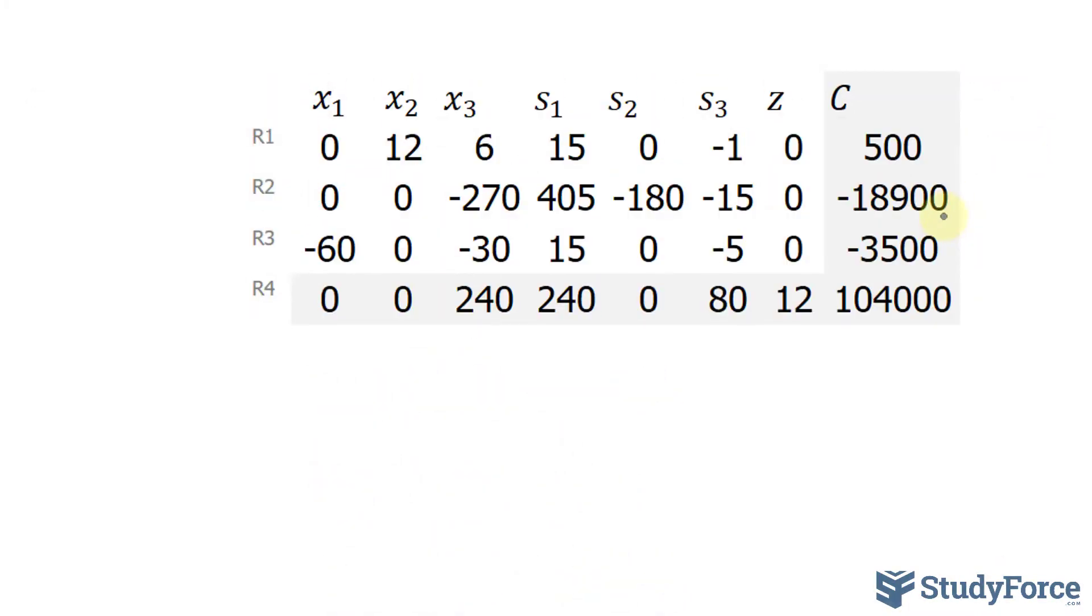At this point you should notice that your objective function no longer has any negative numbers. So you can start solving. This will serve as one of your basic solutions. So will this column. And the reason why I'm choosing x1 and x sub 2, because you only have one number and the rest are zeros.